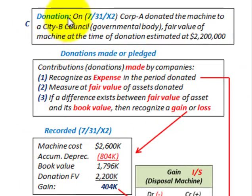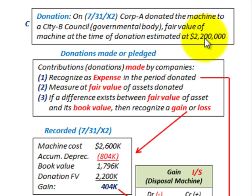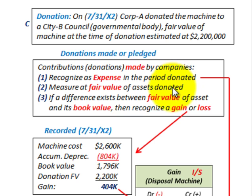Now let's look at the case where Corporation A donates a machine to a city or governmental body on 7/31/X2. The fair value of the machine at the time of the donation is estimated to be $2,200,000. For donations made by companies: first, recognize as an expense in the period donated; second, measure at the fair value of assets donated, here $2,200,000; and third, if a difference exists between the fair value and book value, recognize a gain or a loss.